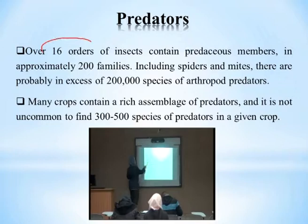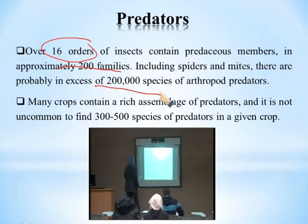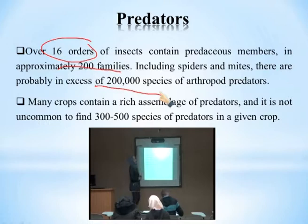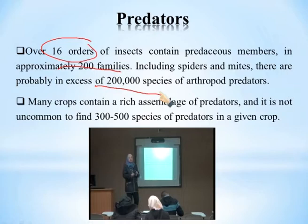There are orders and families containing predatory organisms — about 200 families. There are approximately 200,000 species present in the Arthropoda — the hexapods. A many-crop entomophagous assemblage of predators is not uncommon; it is not unusual to find 300 to 500 species of predators in a given crop, showing great diversity among predators.